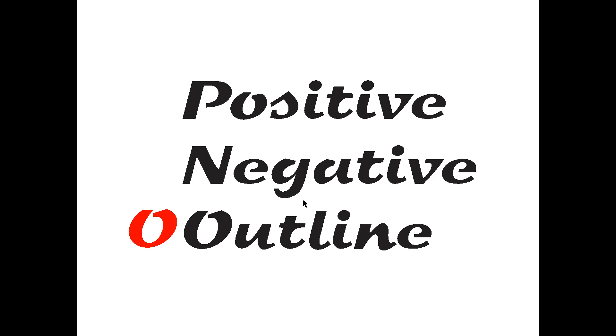In this lesson we're going to look at how to make positive, negative, and outline textiles. What I've done is typed in some text and hit 'Convert to Curves' and 'Break Apart' so that all of the letter parts are separate shapes. If we go into wireframe mode,